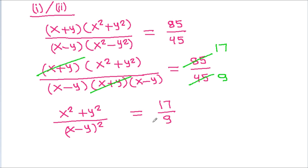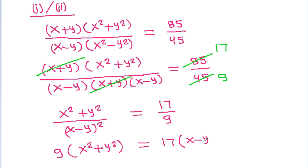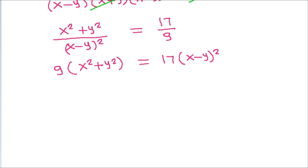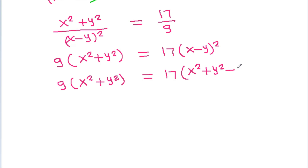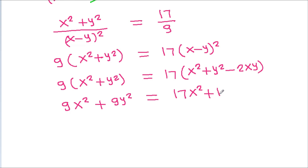If we cross multiply, then 9 times (x² + y²) is equal to 17 times (x² - y²). Expanding, 9x² + 9y² equals 17 times (x² - y²), which gives 9x² + 9y² = 17x² - 17y² - 34xy.